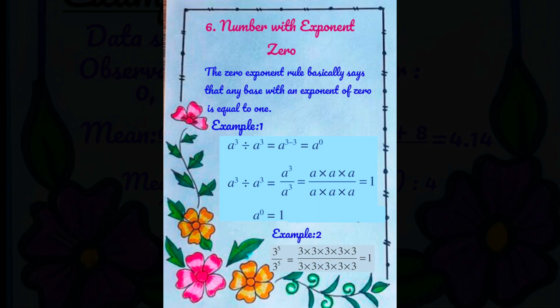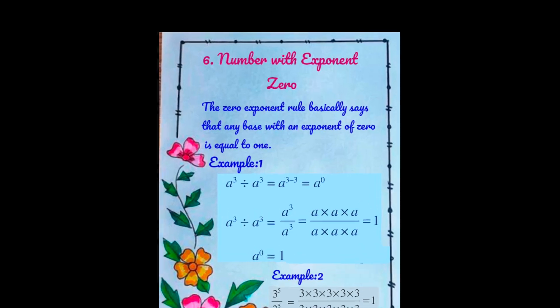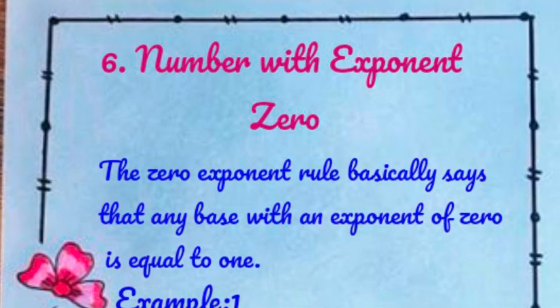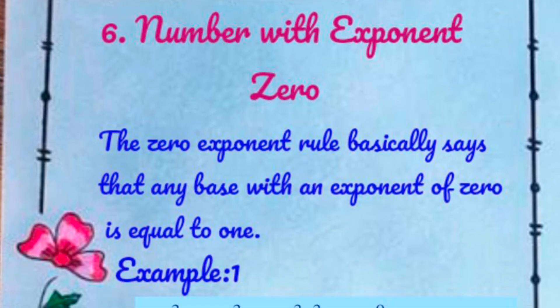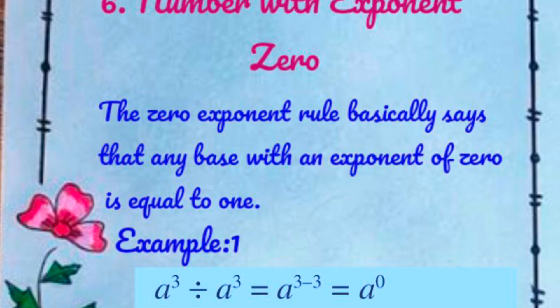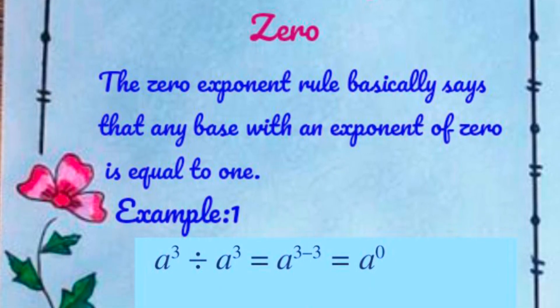The next and last law is a number with exponent 0 — its information and example. Here is the close look of the page.